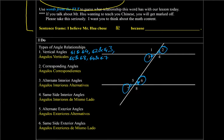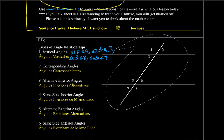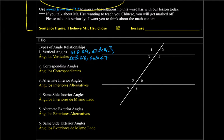Corresponding angles. Ángulos correspondientes. So these ones would be ones that are in the same position. Ángulos en mismas posiciones. For example, 1 — and then 5. Same thing. Mismo posición. It's in the top left. A la izquierda, arriba. So 1 y 5. 1 and 5.